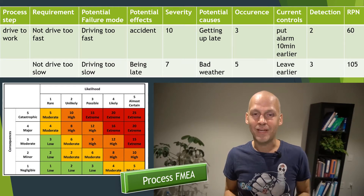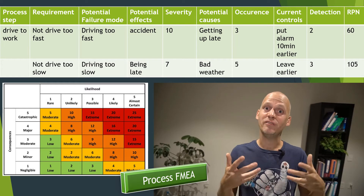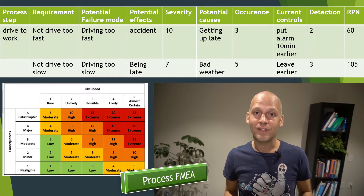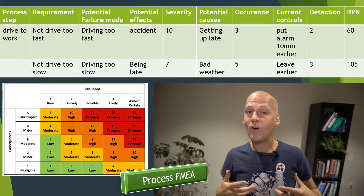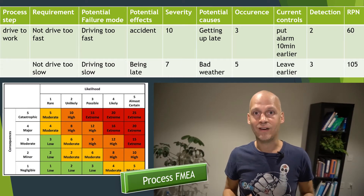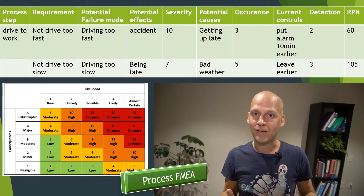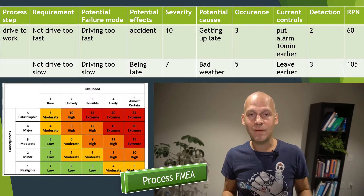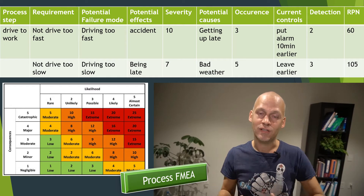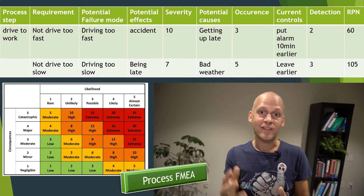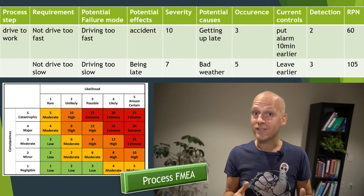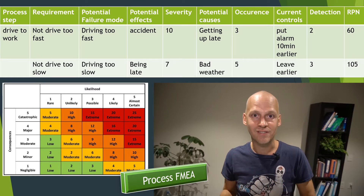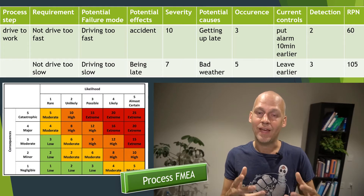The risk priority number is basically based on severity — that means how severe the problem is — occurrence, which means how likely it is to happen, and detection, which means how likely you are to detect this failure before it affects your customer or your own employees. When you multiply severity, occurrence, and detection, a very high number indicates very high risk and a low number indicates lower risk, so you can compare all the risks within your process and see which areas are most likely to have a problem.